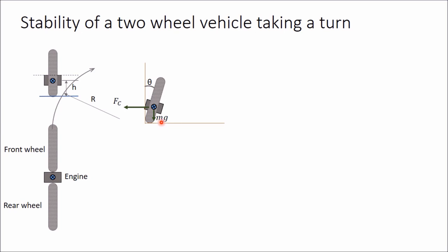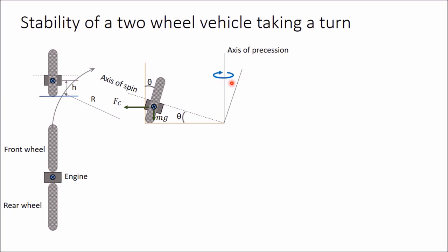Let us discuss the gyroscopic effect in this situation. This is the axis of spin about which this wheel is rotating. This vehicle is making an angle of theta from vertical, so perpendicular to this, this line is perpendicular to this wheel and will make the same angle theta from horizontal. Now there is another axis — the axis of precession. When this vehicle is moving forward, this spin axis is rotating about the axis of precession in clockwise direction when looking from the top.